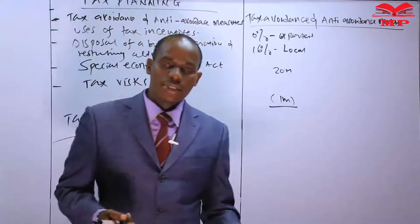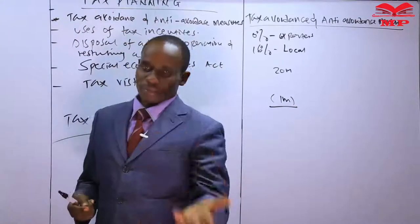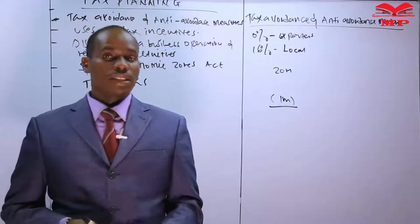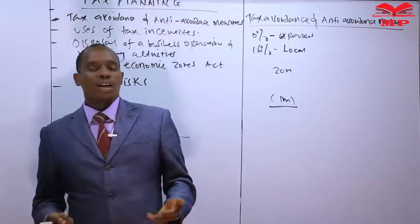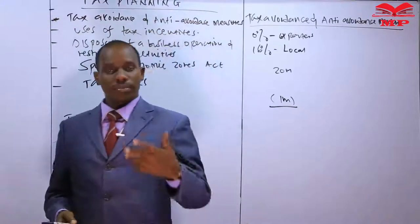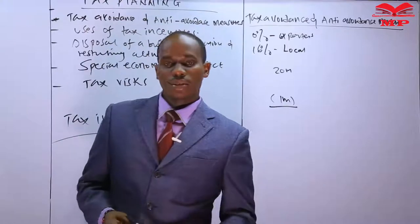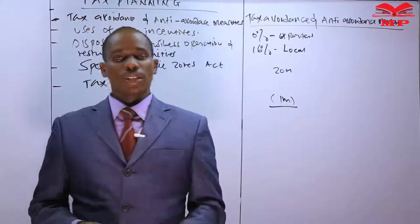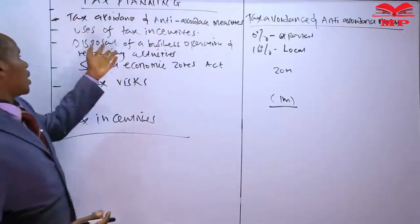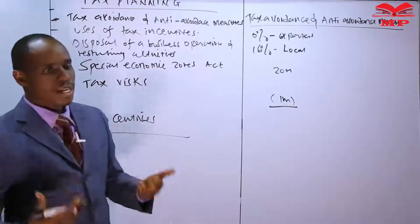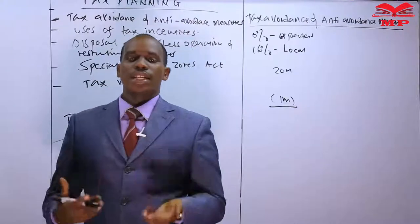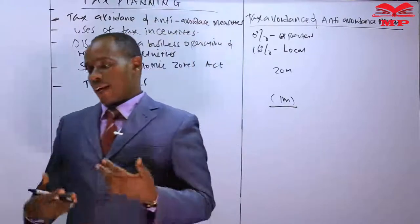Examples of tax incentives include taking advantage of capital allowances such as investment deduction for normal manufacturing, wear and tear allowances, personal reliefs, double taxation relief, and claiming input VAT. Now, what are some of the uses - why does the government grant tax incentives to its people?